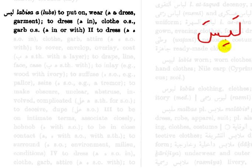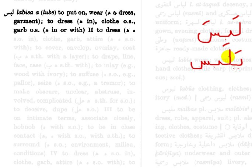Now when we construct a present tense verb from labisa, what we do is first put the letters in. Remember the sin always gets a dhamma, so it's this middle letter that changes. We don't know if it's a fatha, a kasra, or a dhamma — but what does the Hans Wehr tell us? This letter A represents a fatha. If it were an I it would be a kasra, and if it were a U it would be a dhamma.